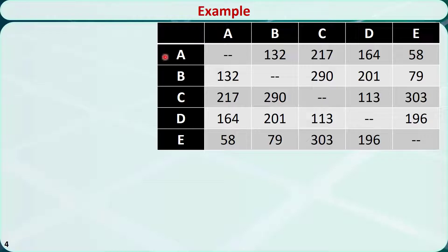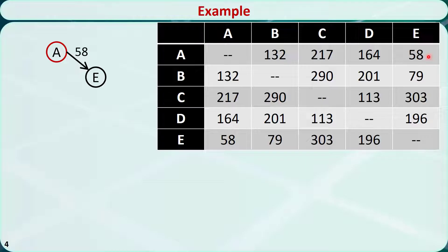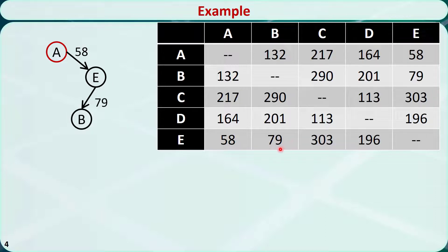We will begin at city A and visit the nearest city. From this distance matrix, we find the nearest city is city E, and the distance is 58. Then let's check this rule for city E. The nearest city to city E is city A, but it is already visited, so we cannot go back to city A right now. The second nearest city is city B, so let's go to city B, and the distance is 79.